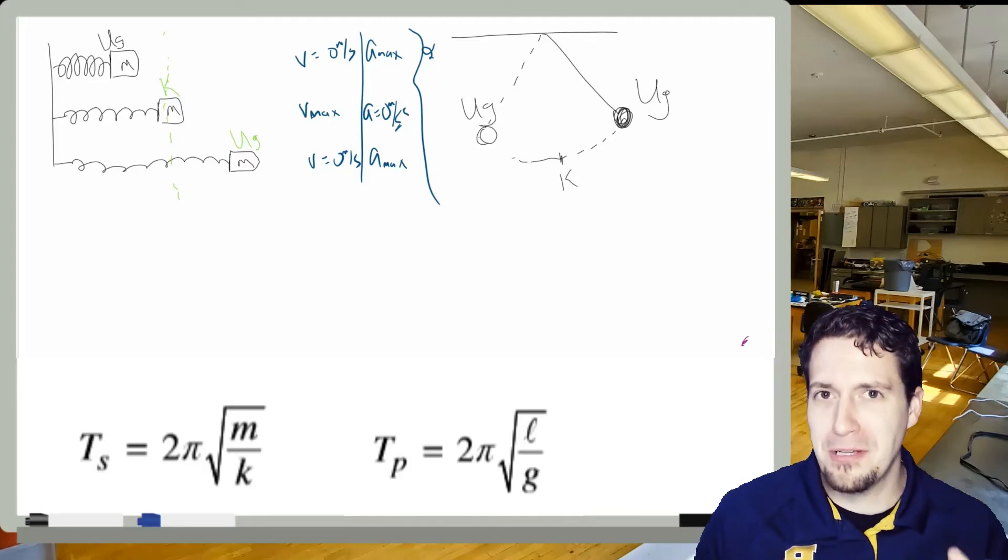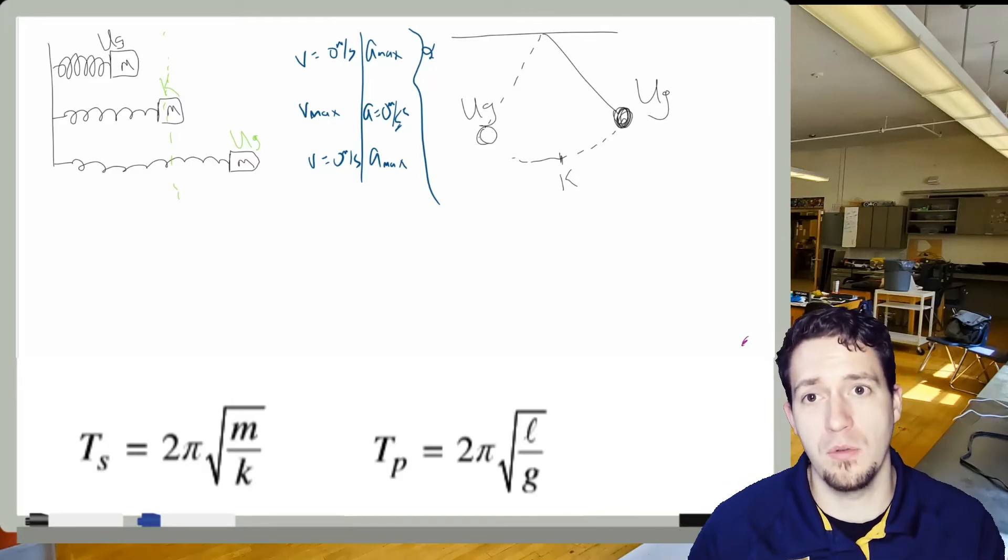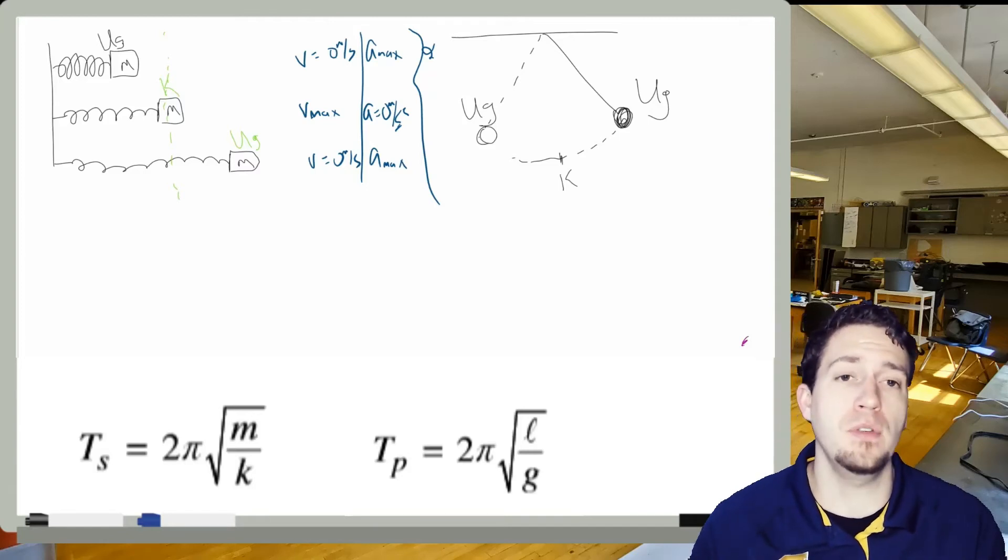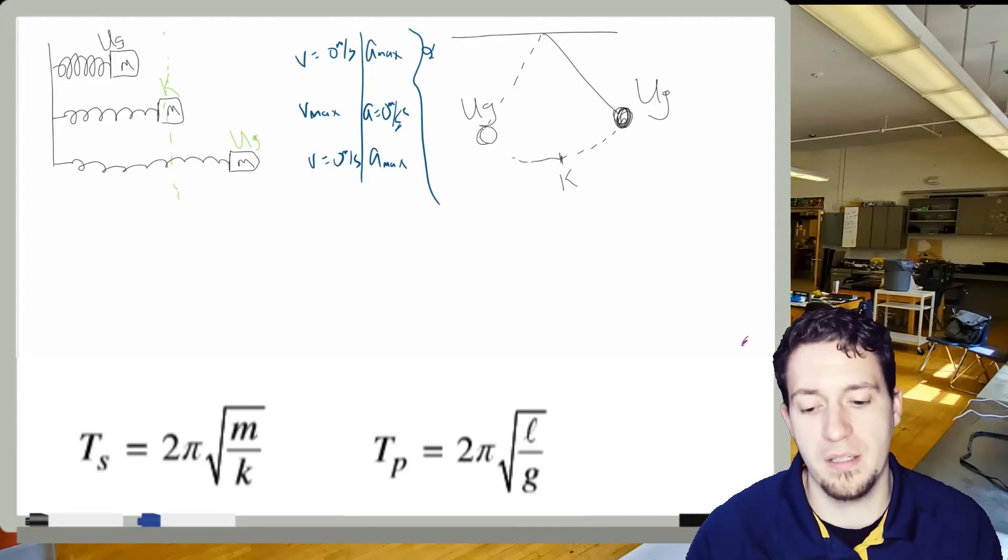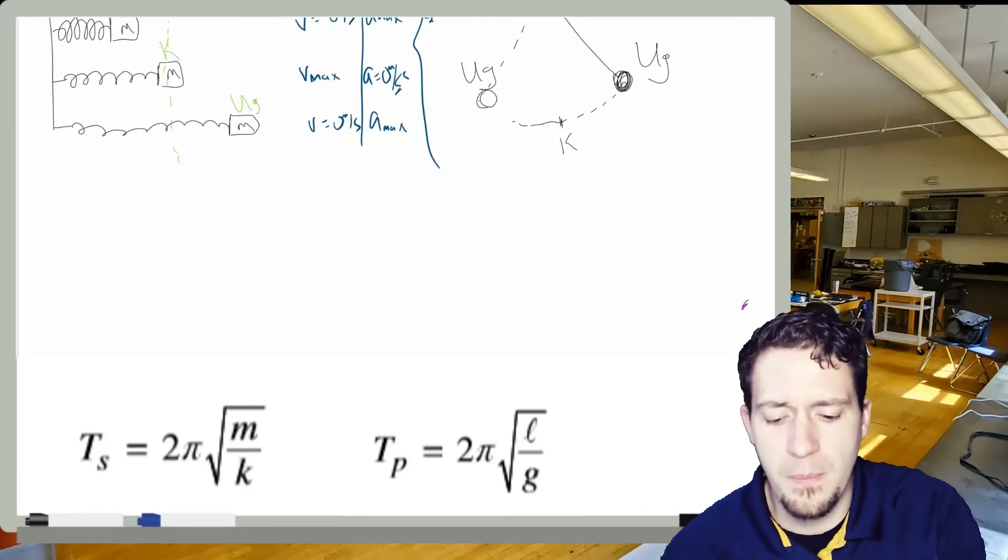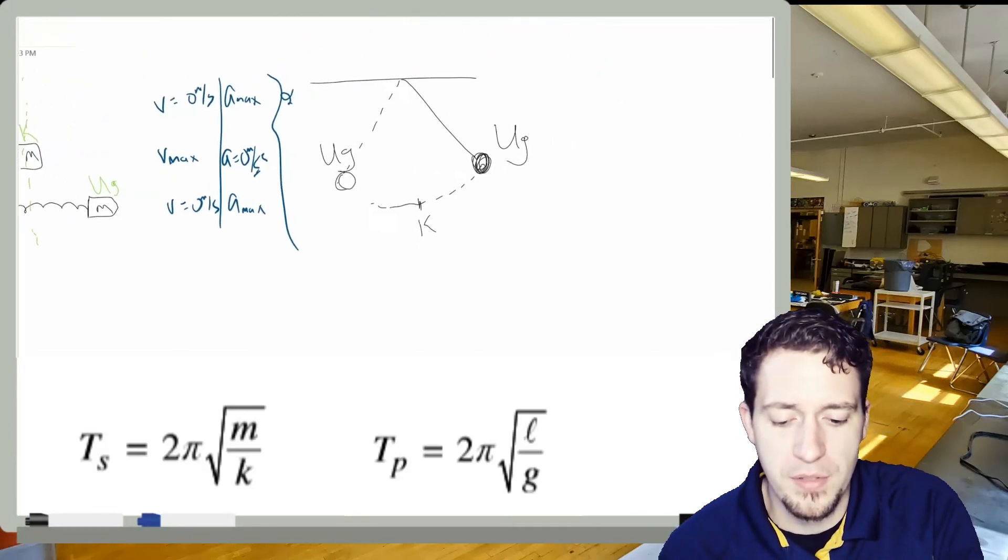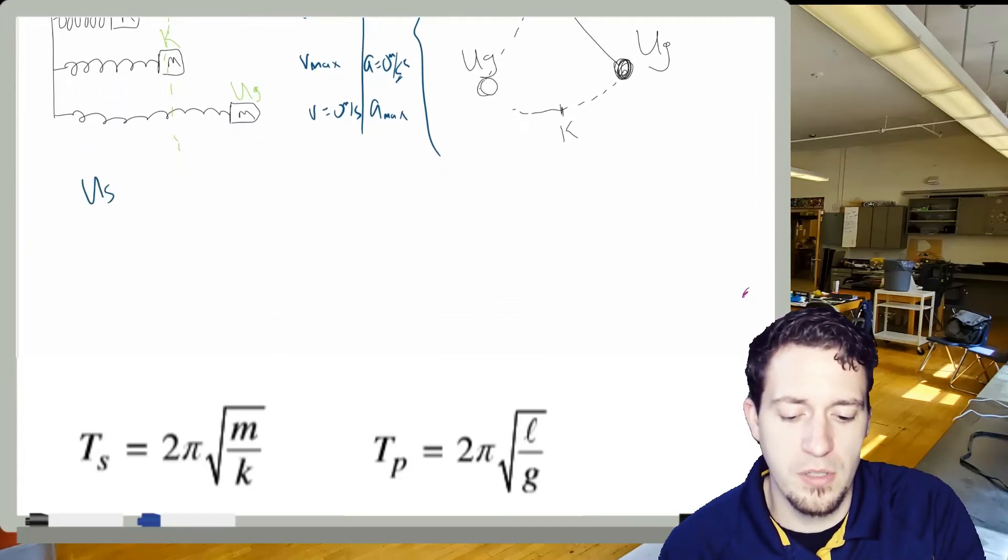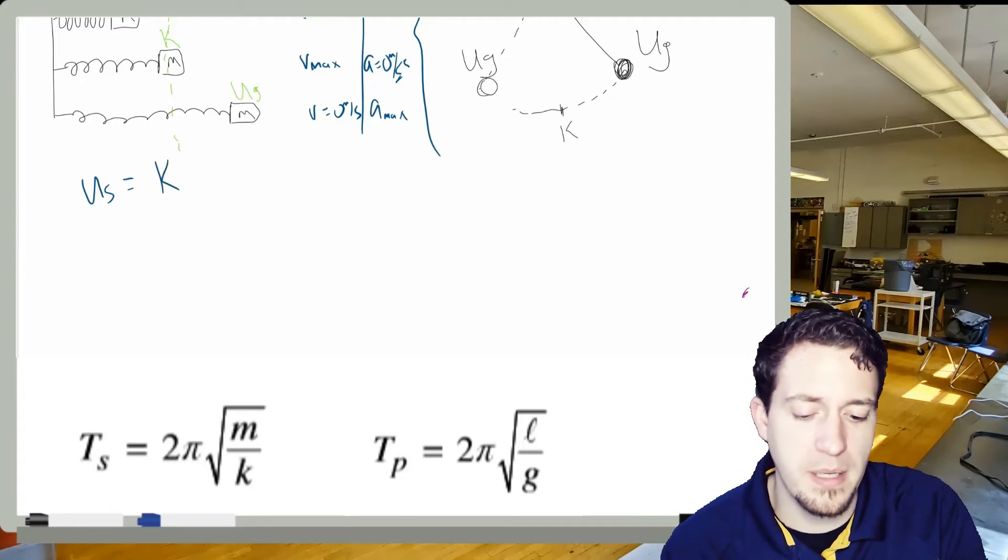Now, how can we do anything with this? Well, we actually can use this sort of in combination to figure out how fast it's moving. So we can find the maximum speed. We also can find the maximum acceleration. Maximum speed, we would use energy.